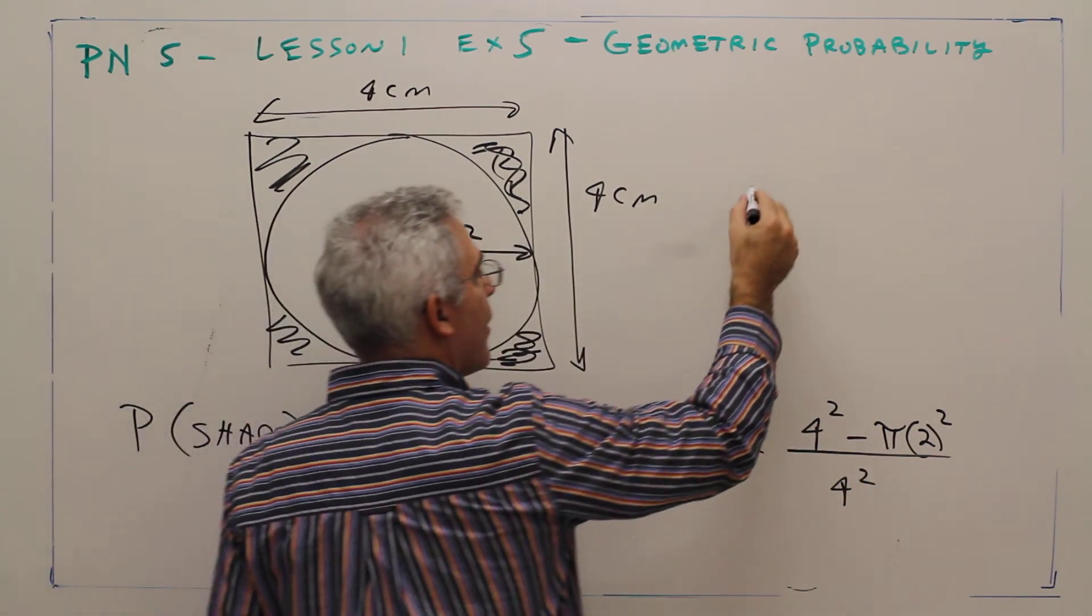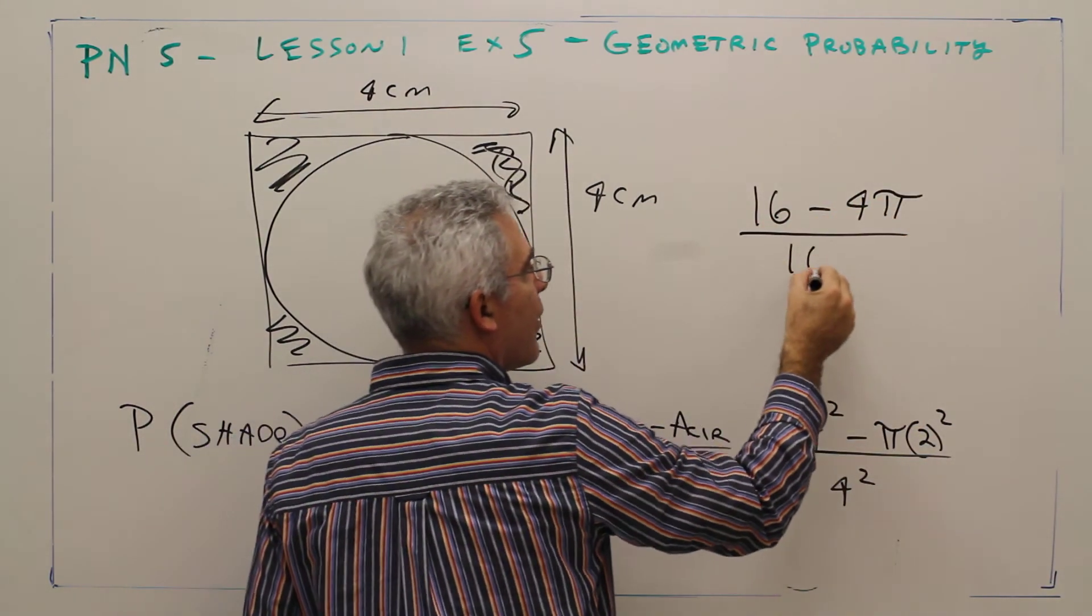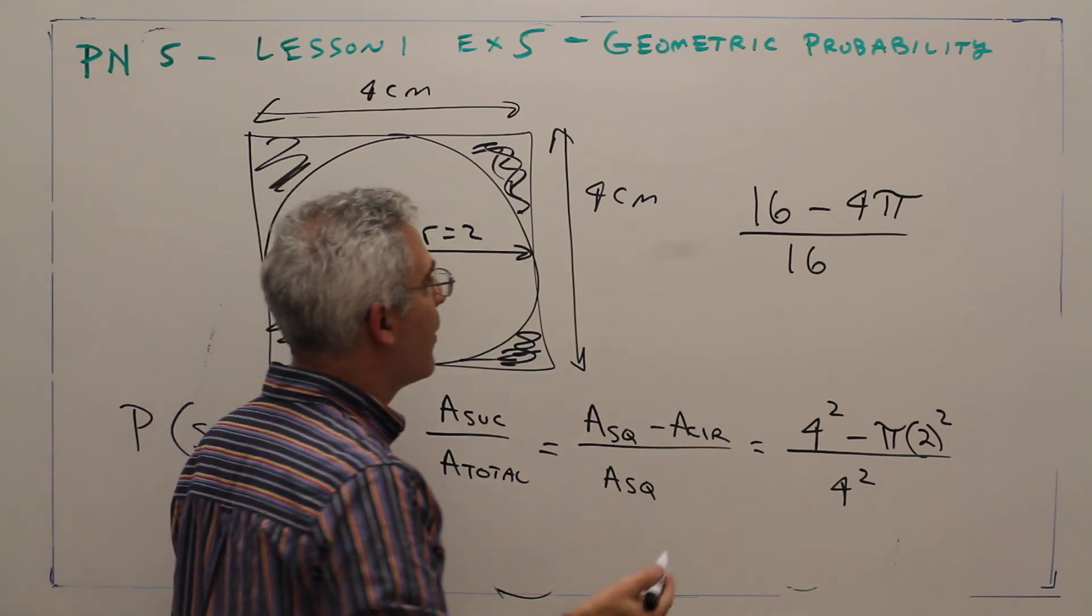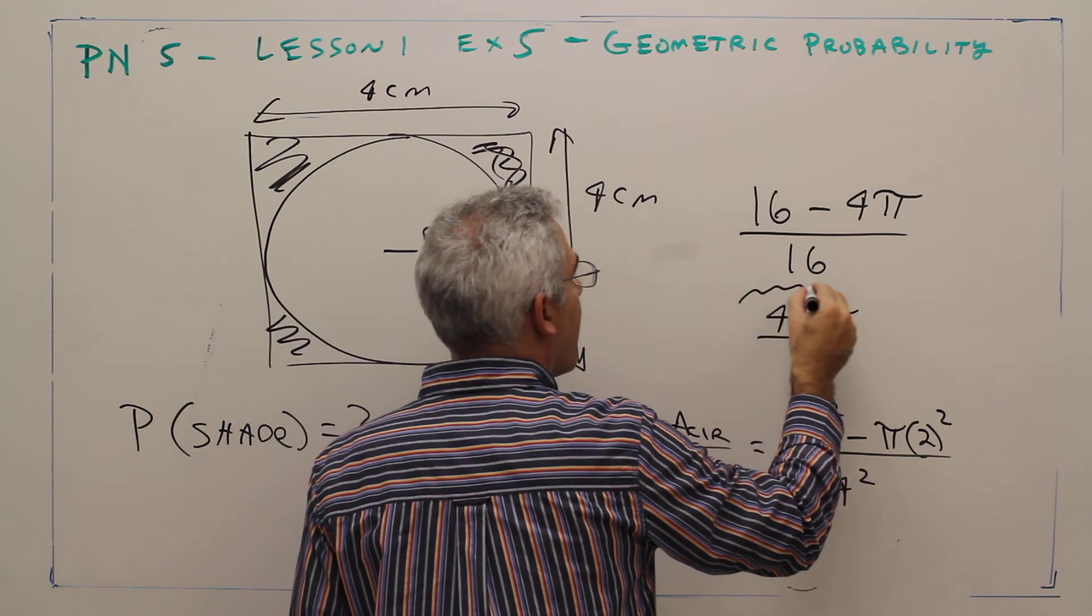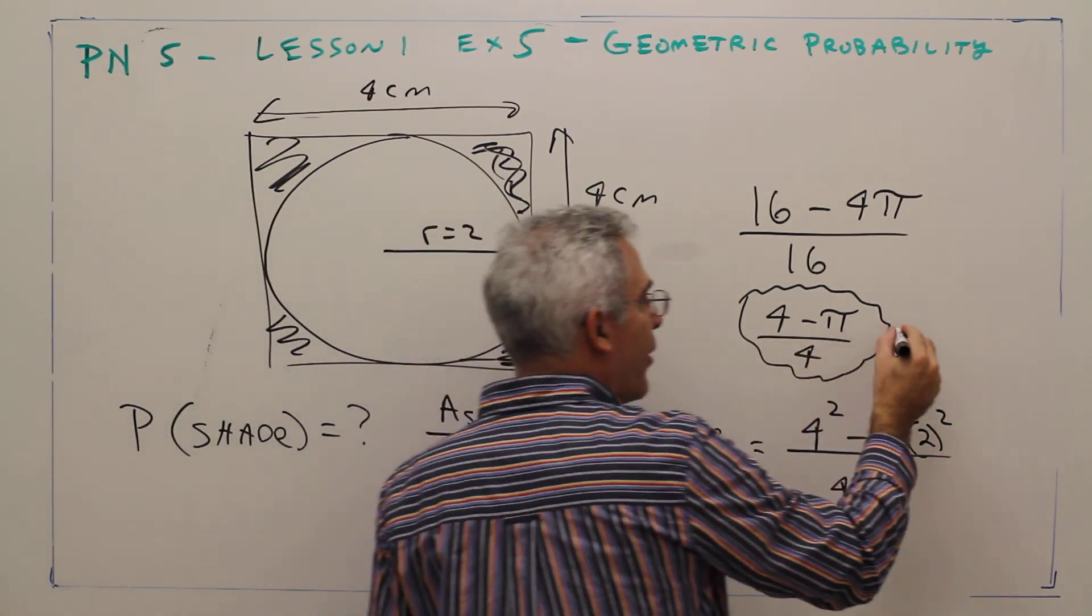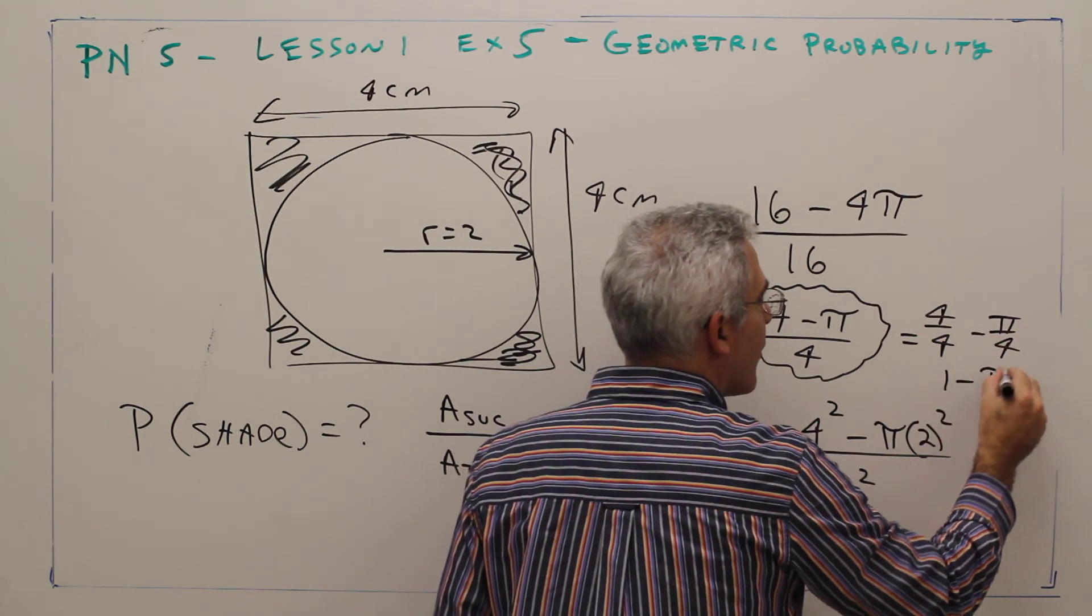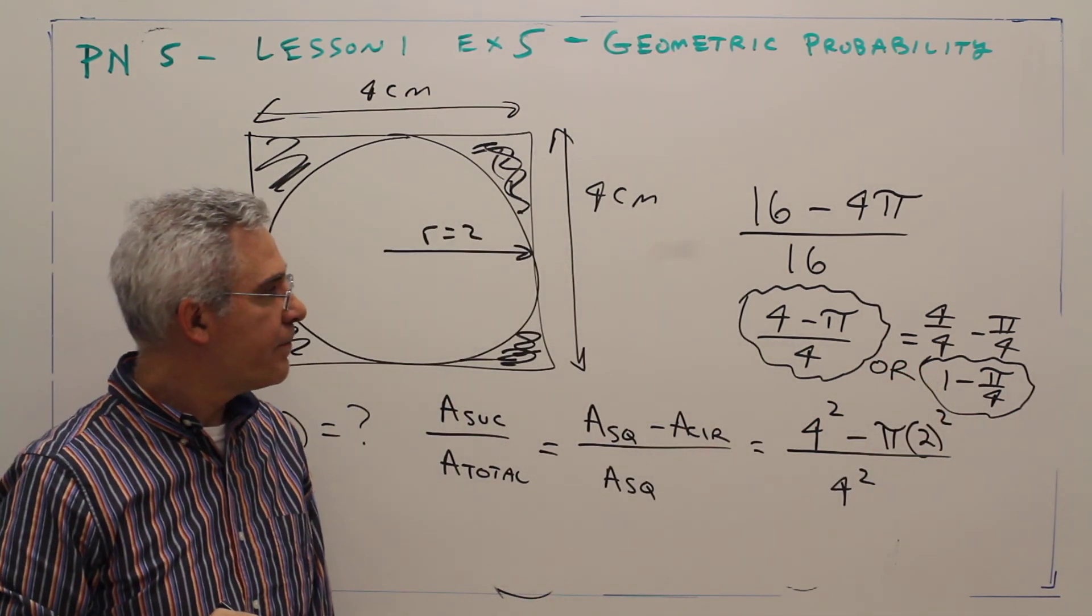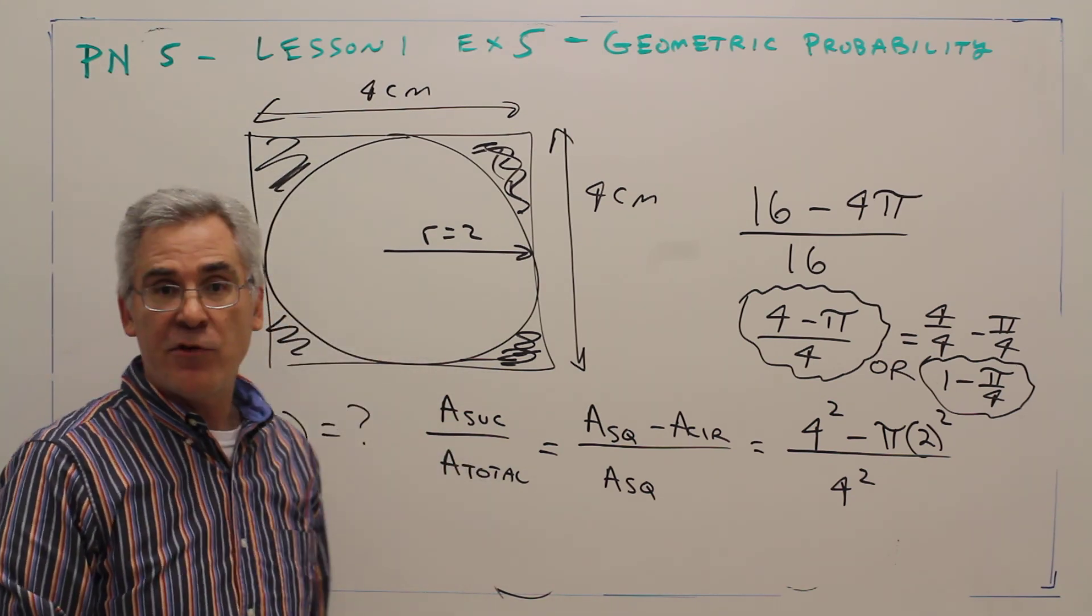Let me simplify that. Sixteen minus four pi all over sixteen. You could divide through by four, so it's going to end up being four minus pi over four. Alternatively you could have written that as four over four minus pi over four, or simply one minus pi over four. Either answer is acceptable. So there you have it: how to use probability to solve these geometric problems.